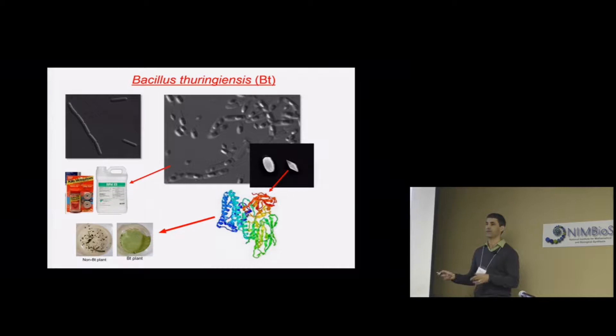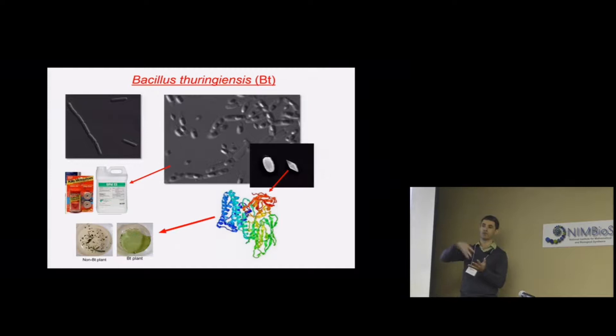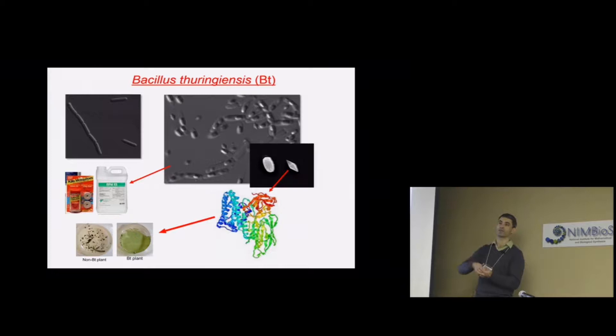This toxin-active core, when you look at its three-dimensional structure, has a domain composed of alpha helices, which are usually associated with proteins that go inside membranes. And then two other domains composed of beta sheets. There is a lot of evidence supporting that these are involved in recognition of specific receptors in target cells. These proteins are the ones expressed in transgenic Bt crops for insect protection.